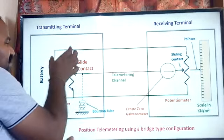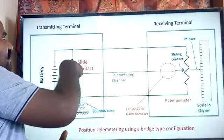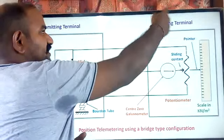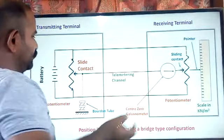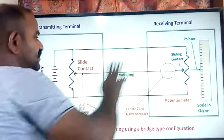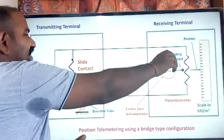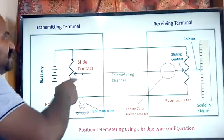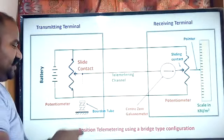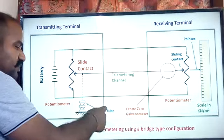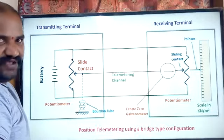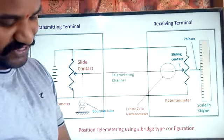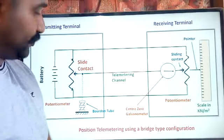The potentiometer at the transmitting end and the potentiometer at the receiving end have their sliding contact points in the same position. When there is a change at the transmitting end, we use a Bourdon tube to sense the pressure of a physical variable. The Bourdon tube is used as a sensor — that is, a transducer — and based on this transducer the sliding contact changes its position either upward or downward.